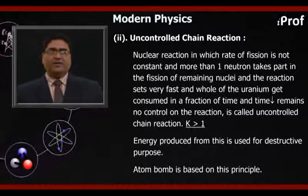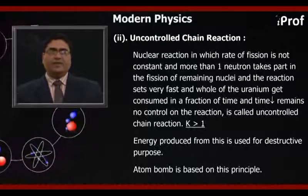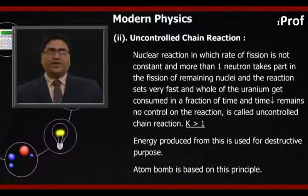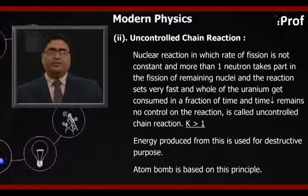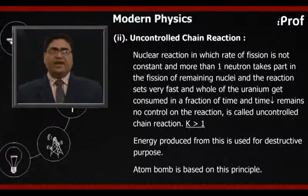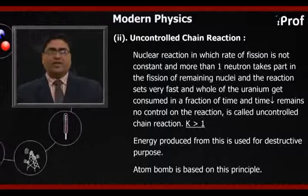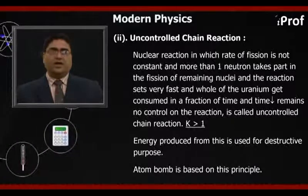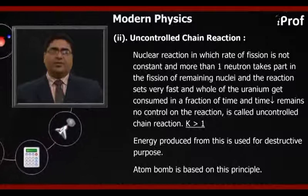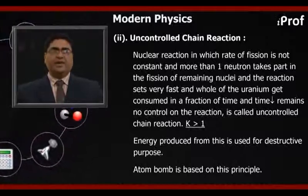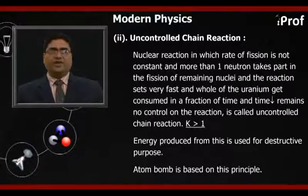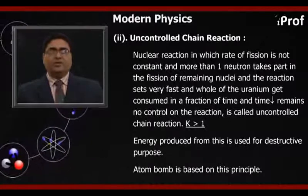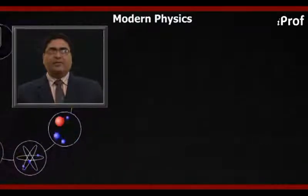The reaction gets very fast and the whole of the uranium gets consumed in a fraction of time with no control on the reaction. This is called uncontrolled chain reaction. Here K, the neutron reproduction factor, is more than 1. The energy produced is used for destructive purposes. The atom bomb, or nuclear bomb, is based on the principle of uncontrolled chain reaction.